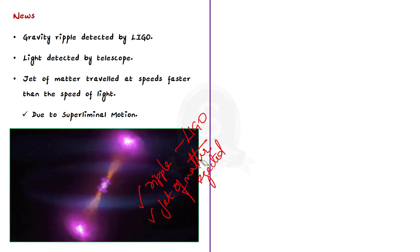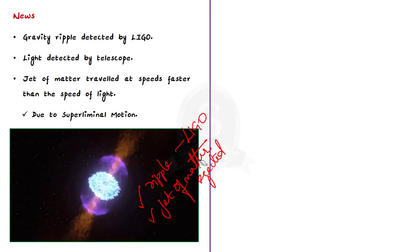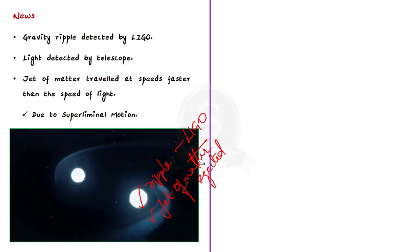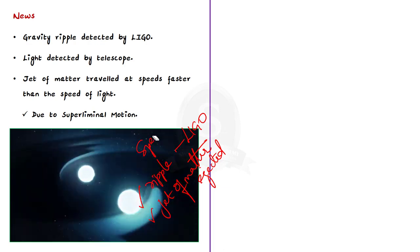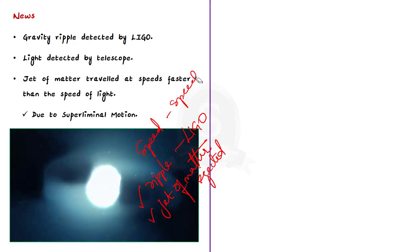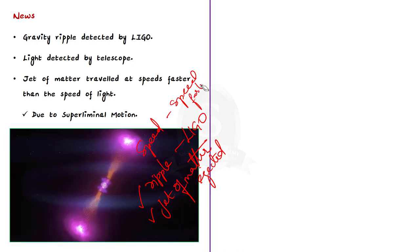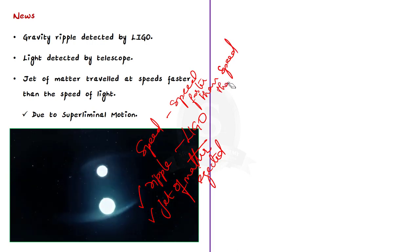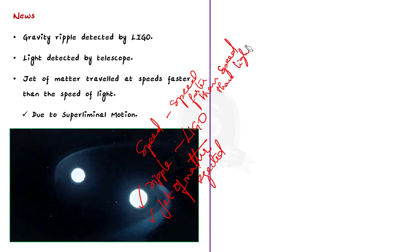Only after both the observations matched, this astrophysical event was confirmed. Another interesting thing that was noticed was the speed of the jet of matter that was ejected. It was observed to be traveling at speeds faster than the speed of light. Now this is not supposed to happen, right?